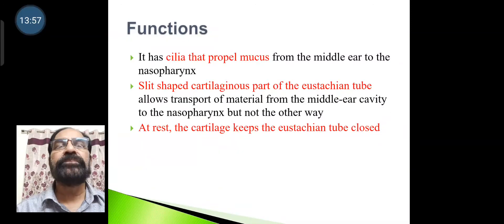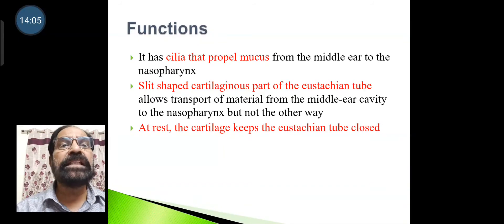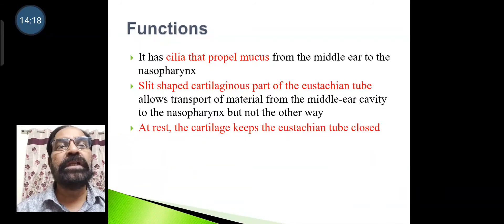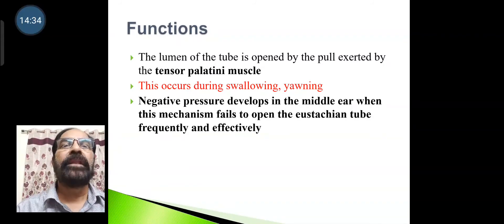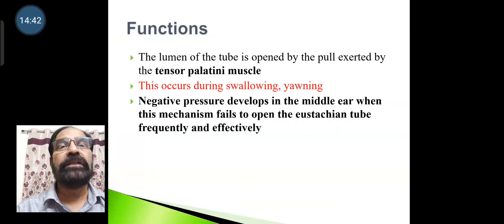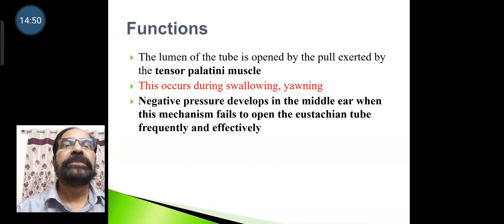Functions of the auditory tube: It has cilia that propel mucus from the middle ear to the nasopharynx. The slit-shaped cartilaginous part allows transport of material from the middle ear cavity to the nasopharynx but not the other way. At rest, the cartilage keeps the auditory (Eustachian) tube closed. The lumen is opened by the pull of the tensor palati muscle during swallowing and yawning. When this mechanism fails to open the tube frequently and effectively, negative pressure develops in the middle ear.